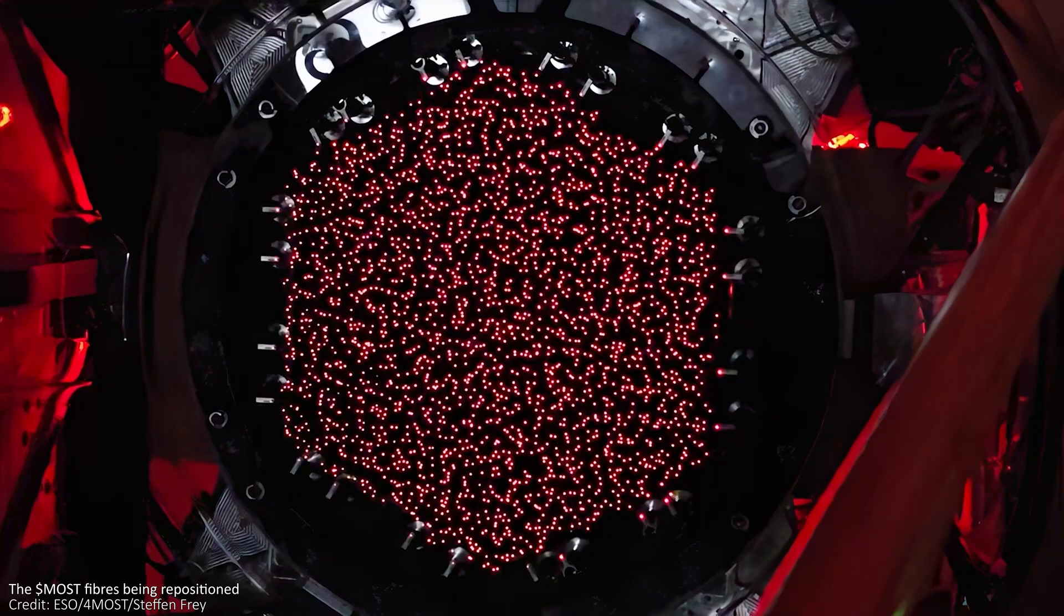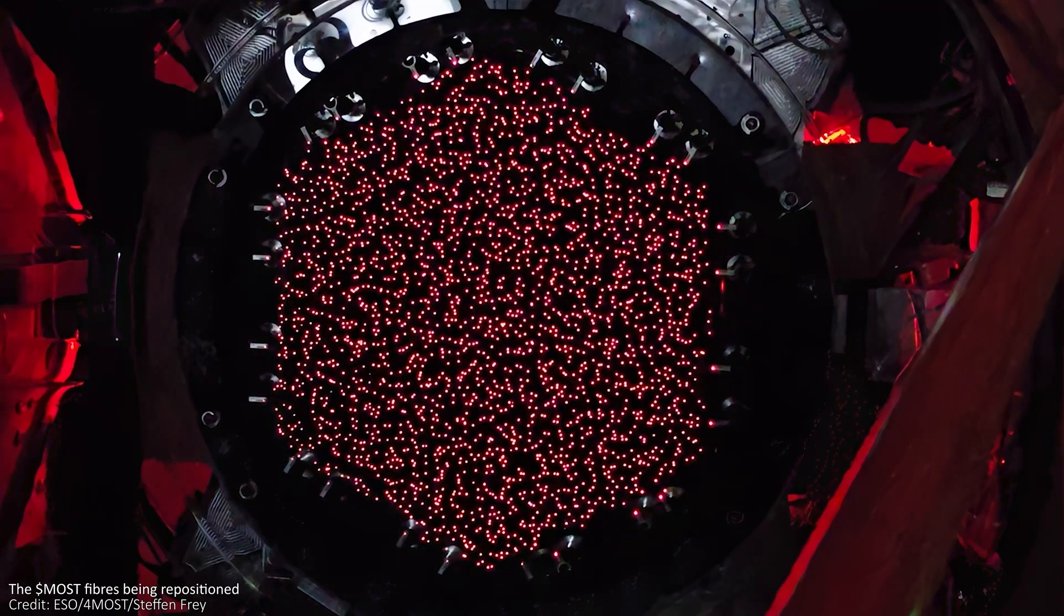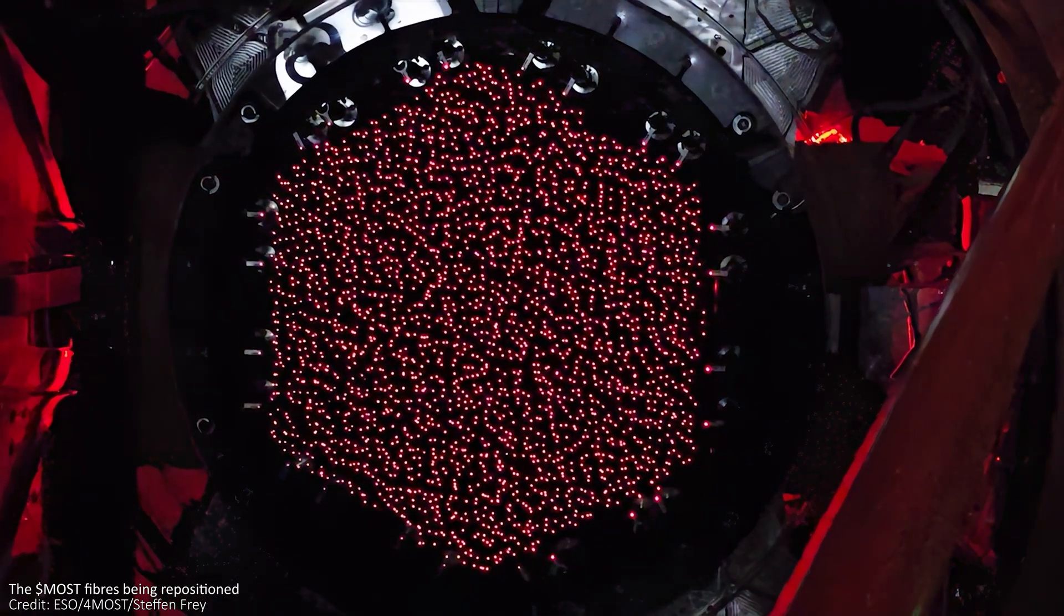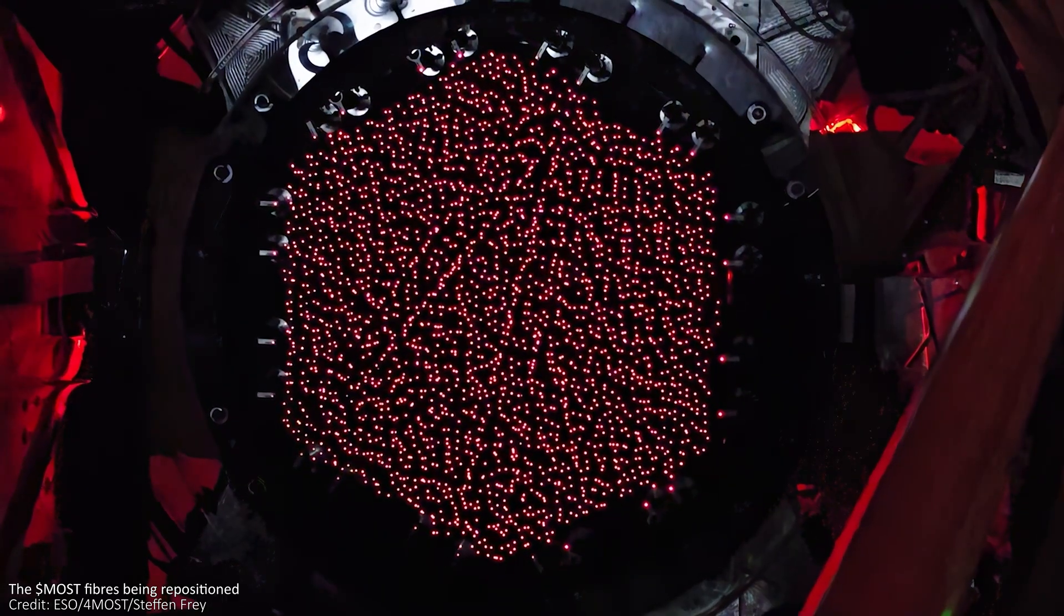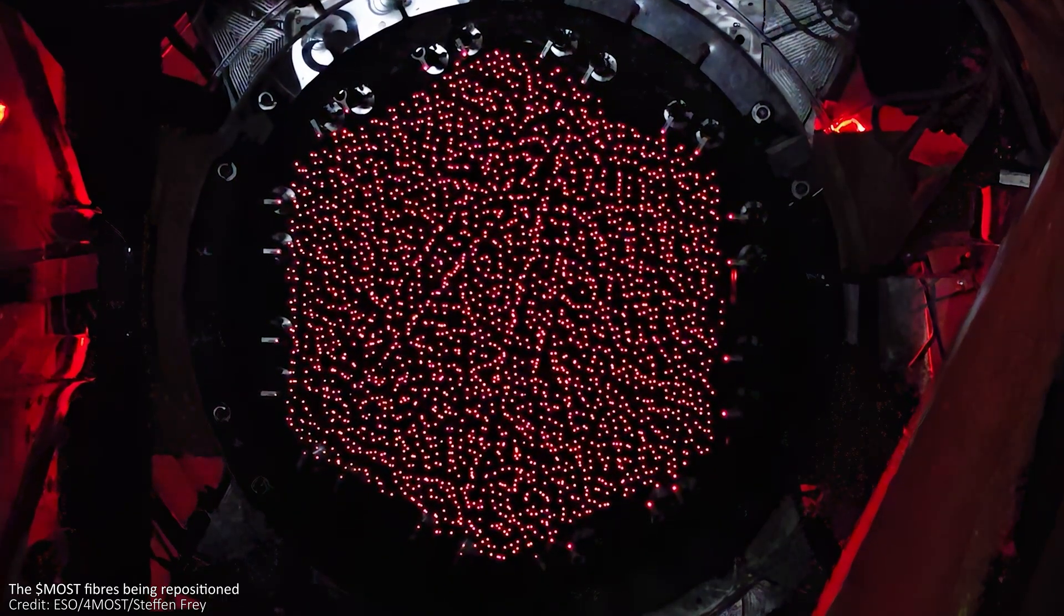Over the next five years, Foremost will survey the entire sky that's visible in the southern hemisphere two or three times, resulting in more than 20 million spectra being taken. As I said, Foremost will observe a new set of objects every 10 to 20 minutes, and all of the 2,400 fibers can be repositioned to observe new targets in less than two minutes.